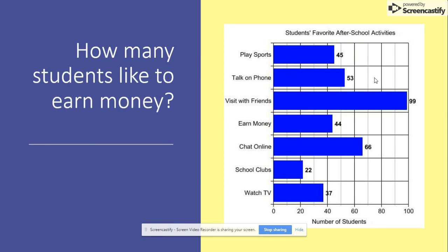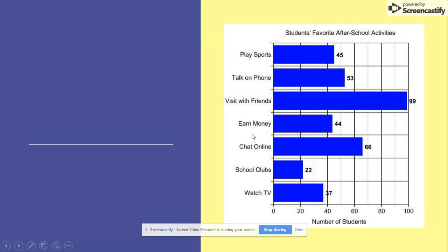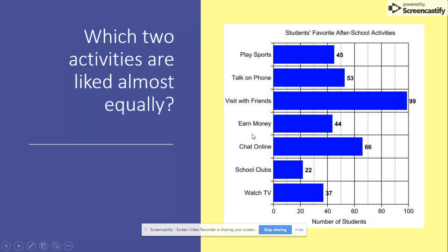How many students like to earn money? 44. Which two activities are liked almost equally? Not perfect, but almost equally. Have a look — playing sports and earning money.